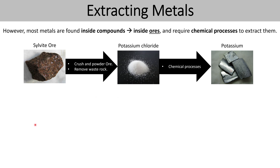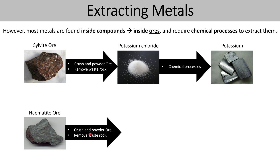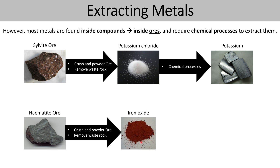Another example would be hematite ore, which is an ore of iron. Again, we'd need to crush and powder the ore and then remove any waste rock, leaving us with iron oxide — a compound of iron bonded to oxygen.